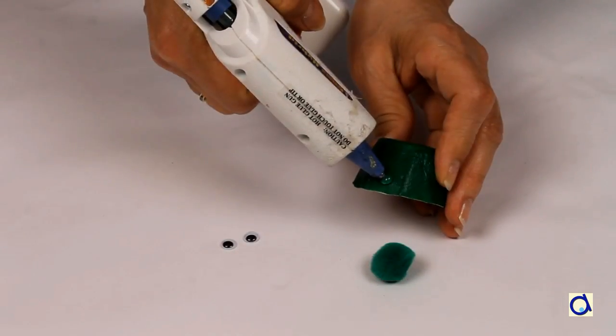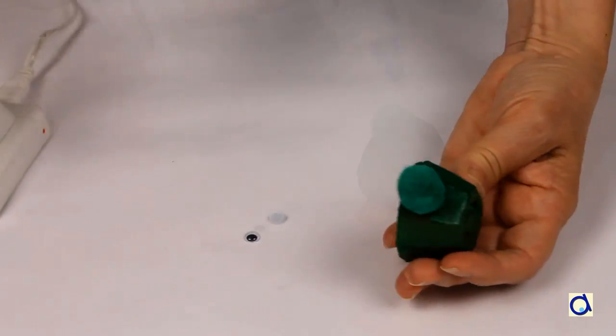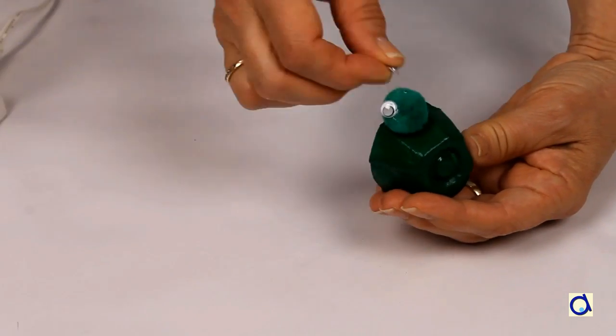To represent the head of the turtle, glue a green pom-pom on one side of the egg carton cell. Next, glue two googly eyes on the pom-pom with a glue gun.